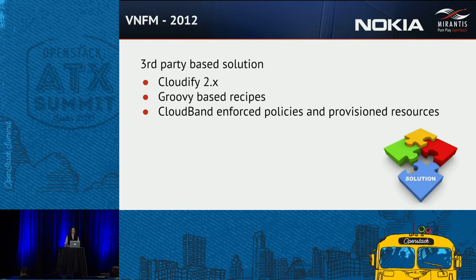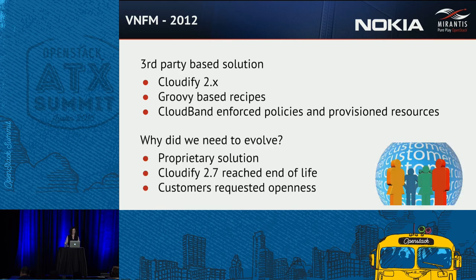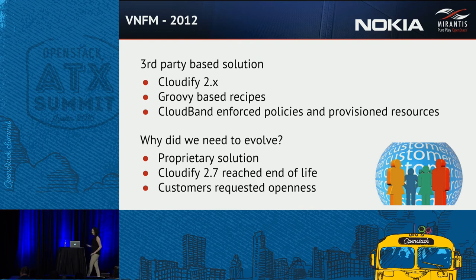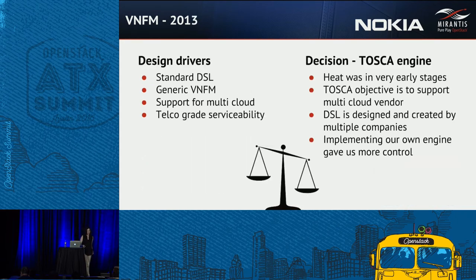Why did we need to evolve if we had a working solution? At the time, customers started wanting openness and discussing it. Vendor lock-in was something everyone wanted to avoid. Our partners declared the product had reached end of life and started working on a completely different new product. We found ourselves in 2013 with a decision to make: what DSL should we go with to develop and deploy cloud applications?